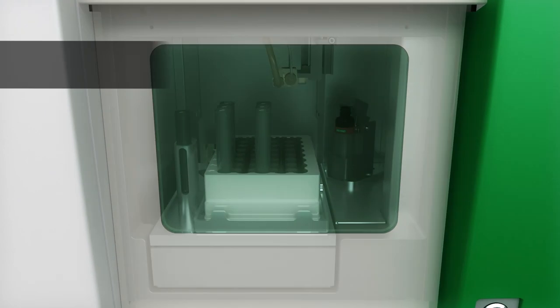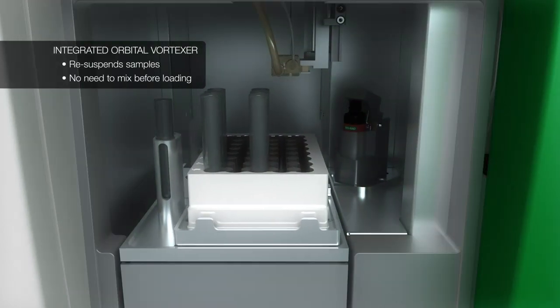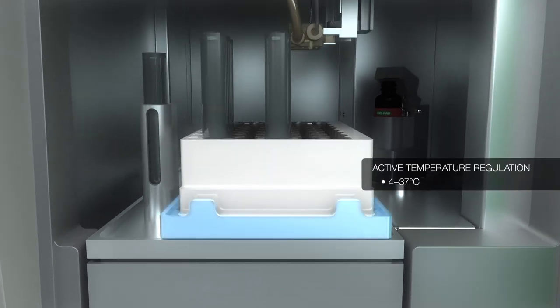The integrated orbital vortexer re-suspends your samples, so there is no need to mix before loading. And with active temperature regulation, your sensitive cell types and assays can be kept at temperatures ranging from 4 to 37 degrees.